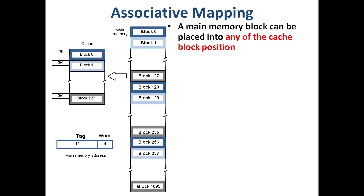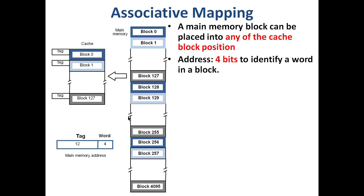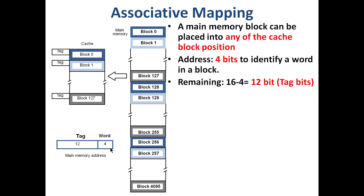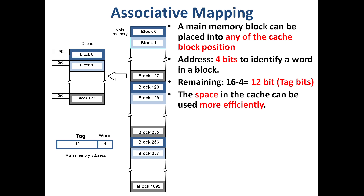In associative mapping, a main memory block can be placed in any of the cache block positions. The address format uses the lower-order 4 bits as the word address (since block size is 16 words). The remaining 16 minus 4 = 12 bits form the tag. Any block can be stored in any cache location.